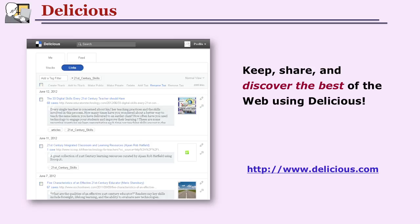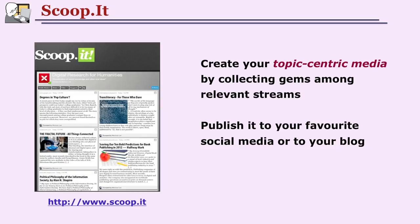There are many other tools. One is Delicious, a tool which can be used for sharing and discovering the best of the web — you can find resources and use them effectively. Like Pinterest, there is another tool called Scoop.it, used for topic-centric media creation. You can create and publish content — as you can see here, there are at least four to five items which are scooped. You assemble them and publish them on the site. Similar to Pinterest, you have topic-centric media resources available at one point.